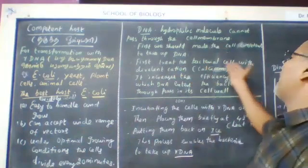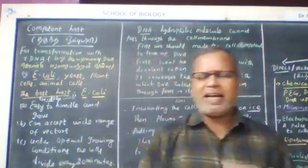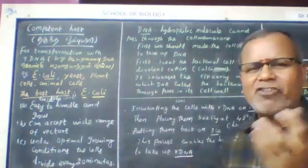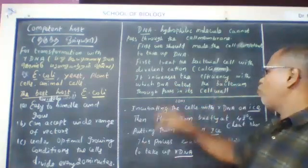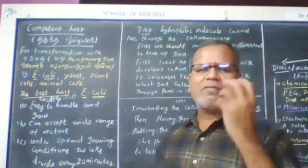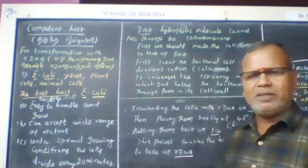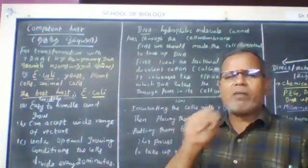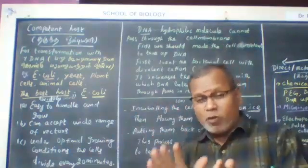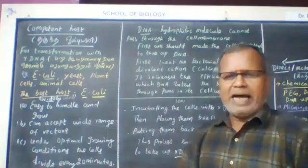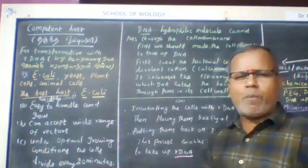That is why we treat the bacterial cell with divalent cation — calcium. It increases the efficiency with which DNA enters the bacterium through pores in its cell wall.